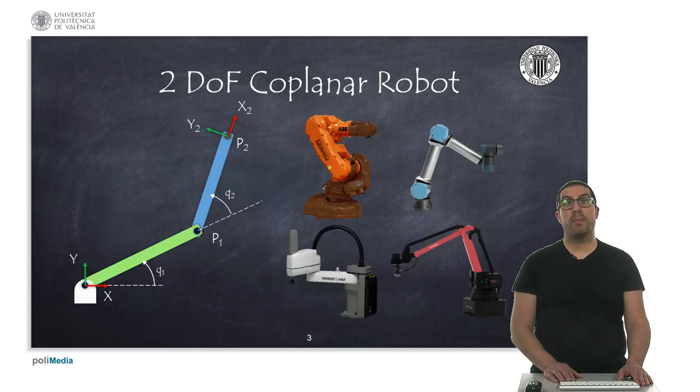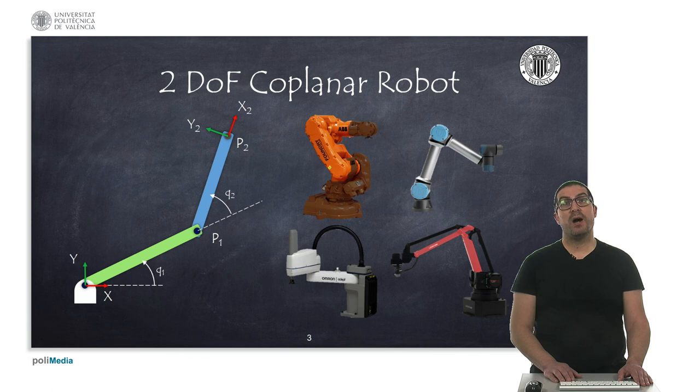The two degrees of freedom coplanar robot is a robot that is used in many academic examples to learn kinematics and dynamics of robots. The importance of this mechanism is that all its elements are contained in the same plane and operates in an R2-S1 space, which greatly simplifies the maths. This coplanar structure appears in many of the real robots and that's why it's an important mechanism to start with.